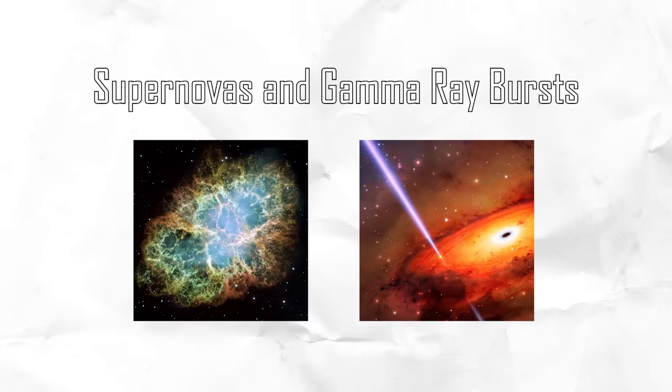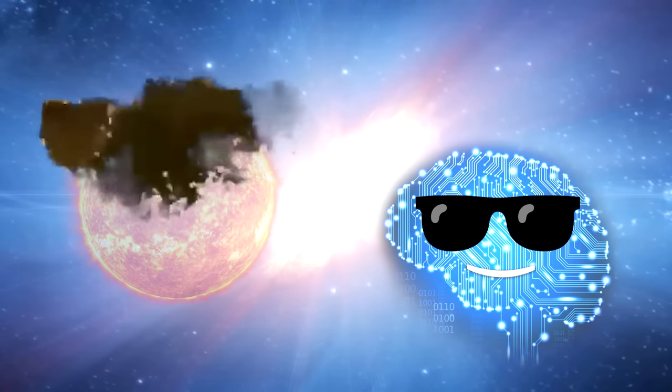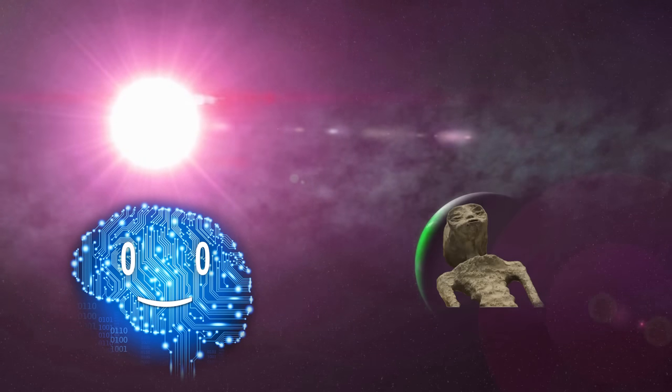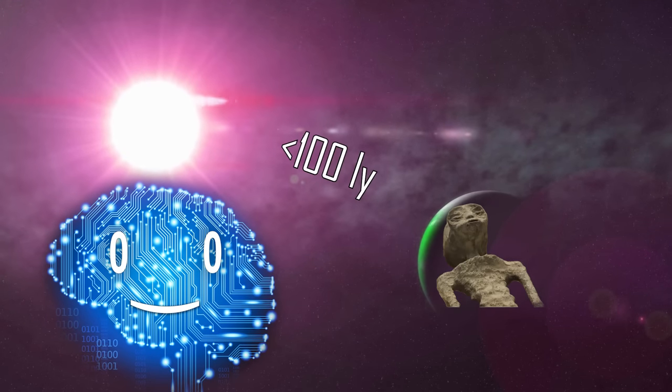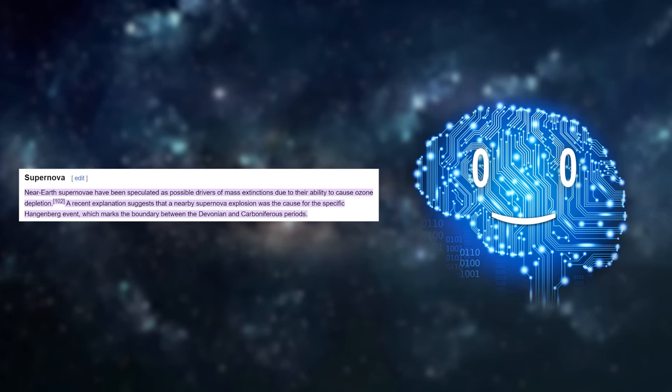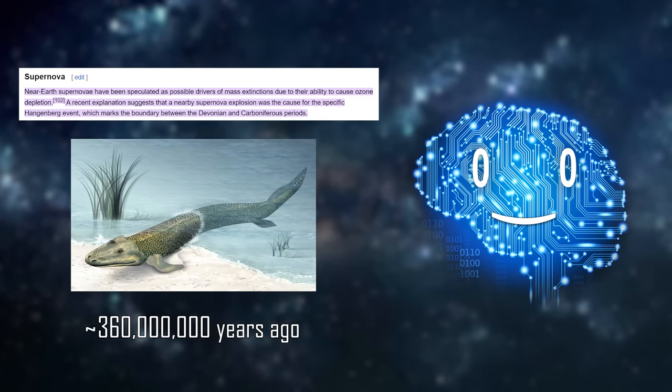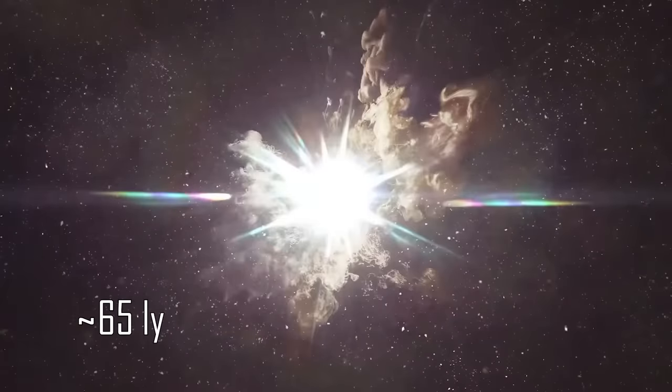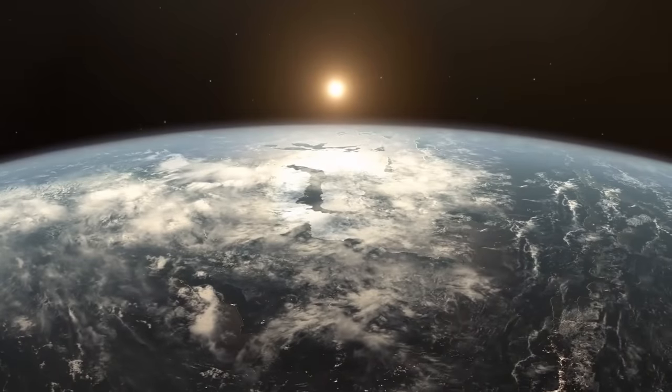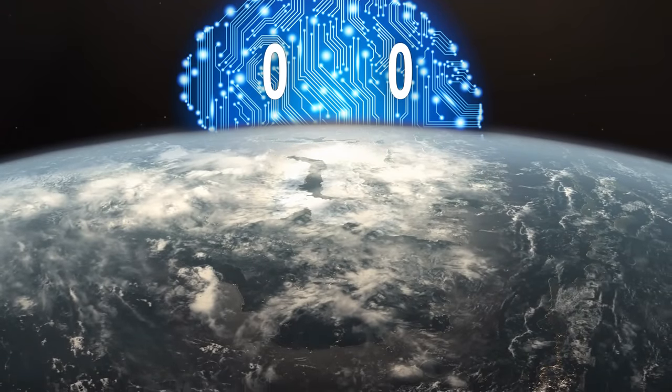Supernovas and gamma ray bursts. Of course big explosions are at the top of the list. These are the largest explosions in the universe caused by the death of the largest stars and the collision of stellar objects. The intense radiation would devastate life on Earth if one were to occur closer than 100 light years. There is some evidence that a supernova may have caused the mass extinction at the end of the Devonian 360 million years ago. A star 65 light years away probably destroyed 70% of invertebrate species. Fortunately for us, no star within 1000 light years is expected to explode for at least a few centuries.